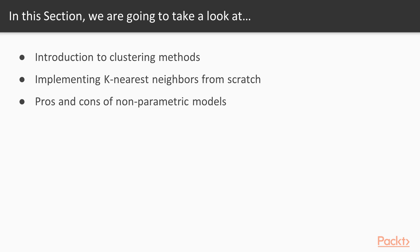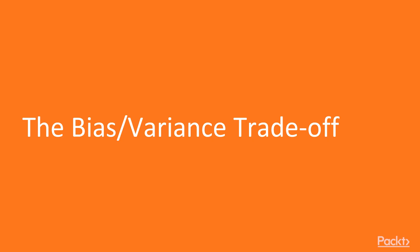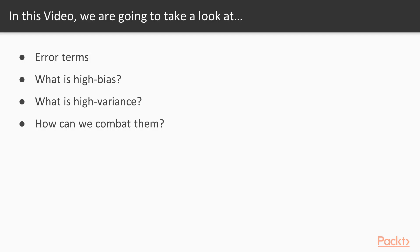Finally, we'll address some of the pros and cons of the nonparametric models. In this video, we're going to continue our discussion of error due to bias and introduce a new source of error: variance. We'll begin by clarifying what we mean by error terms, and then we're going to dissect various sources of modeling error — bias and variance.